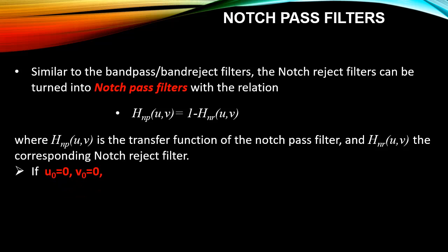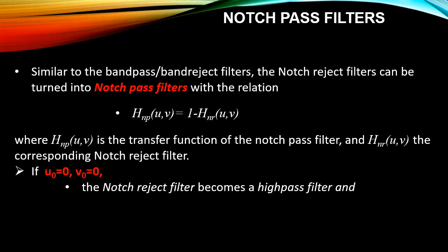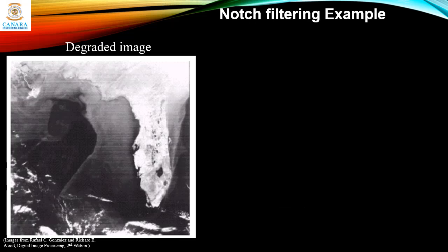If we set u₀ and v₀ equal to 0, the notch reject filter becomes a high pass filter and the notch pass filter becomes a low pass filter. Let us see one example of filtering using a notch filter.